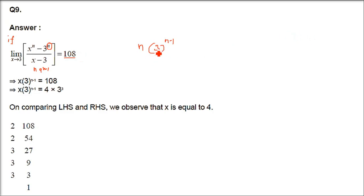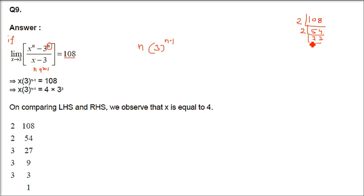So 108: we do normal factorization. Initially when we learn factorization, we do the same thing here. So 108 is 4 times 27, which is 2 squared times 3 cubed — i.e., 2 to the power 2 times 3 raised to power 3.